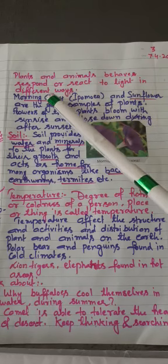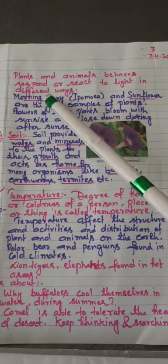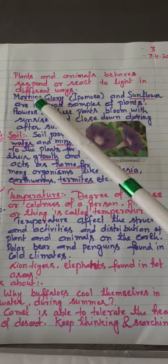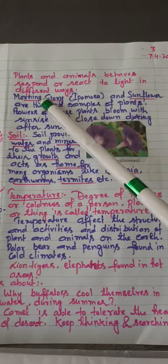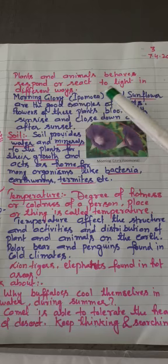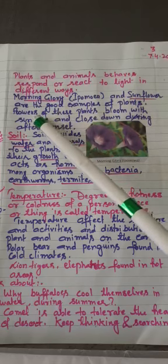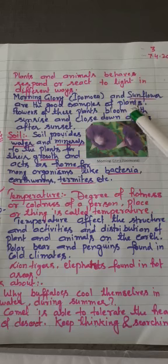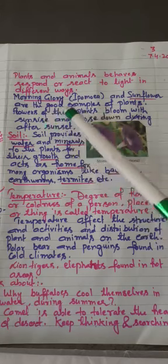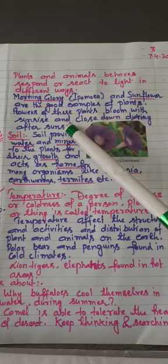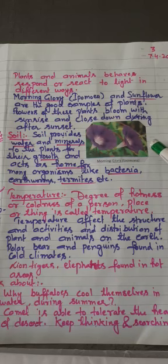Two beautiful examples of plants are also given in our book. The first one is morning glory and the next one is sunflower. Flowers of these plants bloom with sunrise and close down after sunset. You can see the beautiful picture of morning glory there.